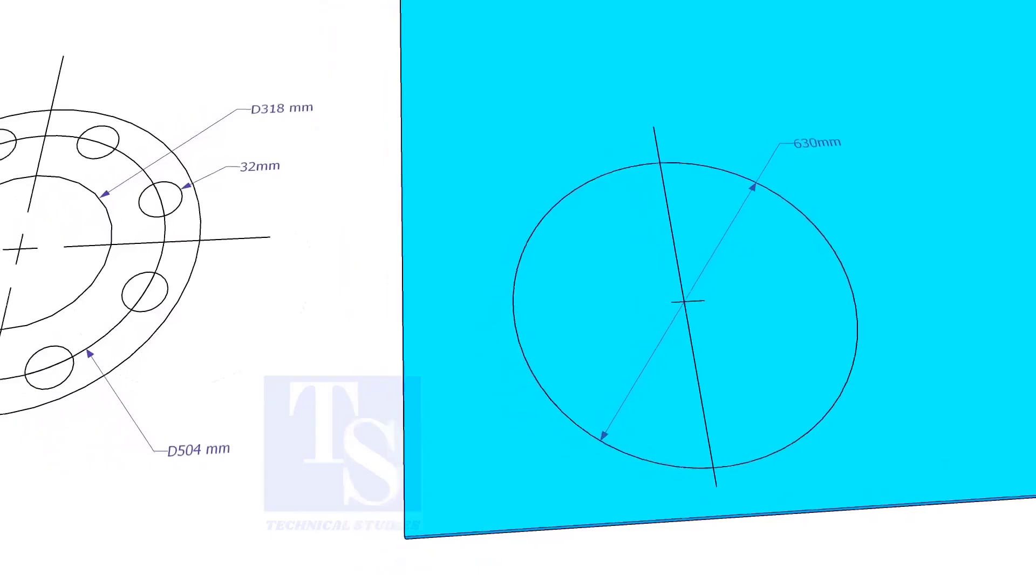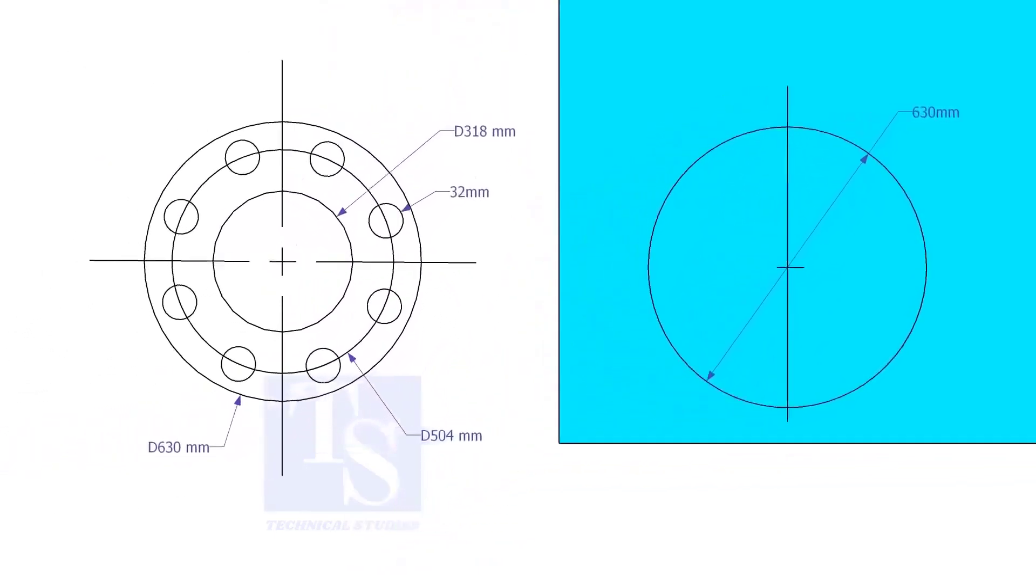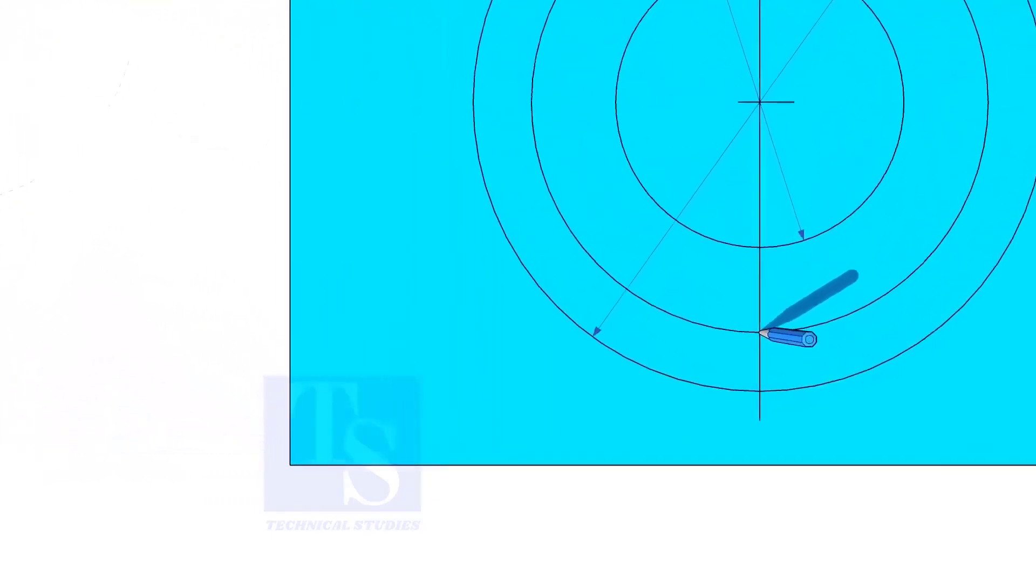Draw the OD and the ID circles. Draw the PCD. Punch mark where the PCD circle cuts the center line.